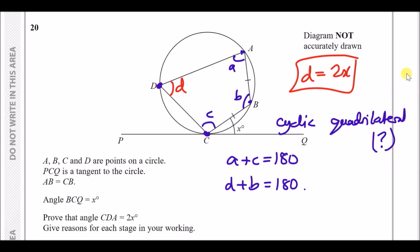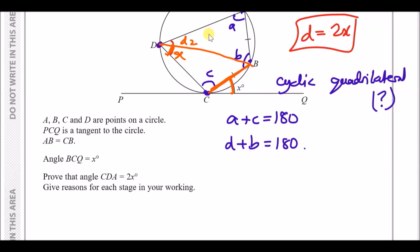Another important theorem is the alternate segment theorem: the angle between a tangent and a chord equals the angle on the other side of the chord in the alternate segment. Splitting angle D into two parts — D1 and D2 — we can say x equals D1, and the remaining part is D minus x.